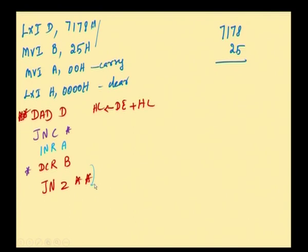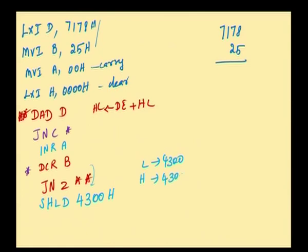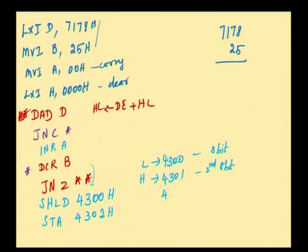Once B reaches 0, I store the result. The lower 16-bit values are in the HL register, so I use SHLD 4300H — L value stored at 4300H, H value at 4301H. Then the higher 8-bit in accumulator is stored using STA 4302H. So the first 8-bit is at 4300H, second 8-bit at 4301H, and third 8-bit at 4302H — totally 24-bit result. After storing, stop the program with HLT. Keep in mind: lower byte should be in lower address, higher byte in higher address. Do not give 4300H for the accumulator.